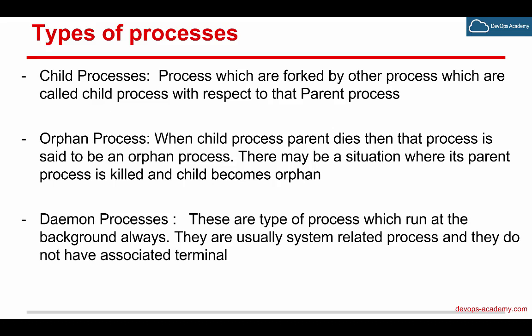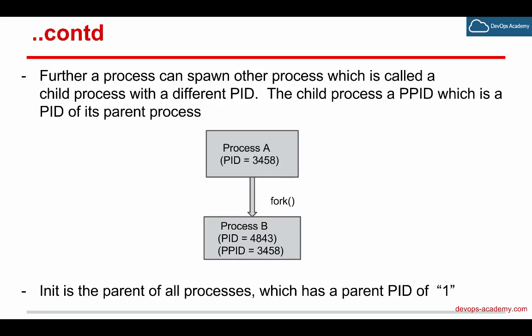Child processes are processes which are forked by other processes. The process that does the forking is called the parent process. In our example, process B is the child process of process A.